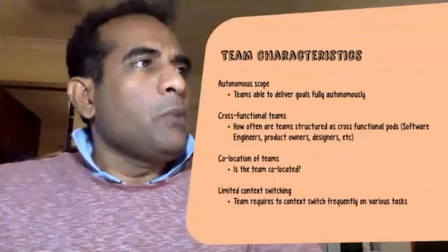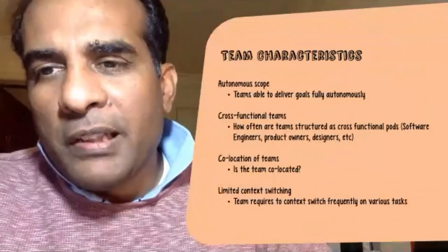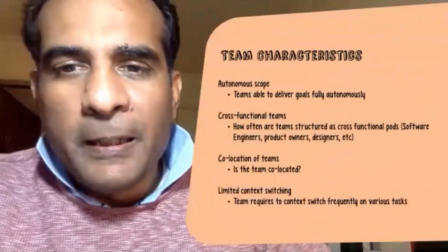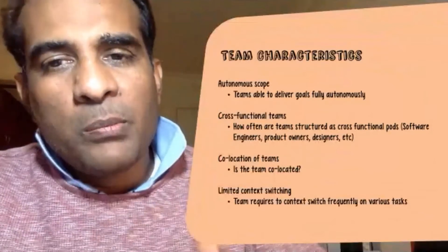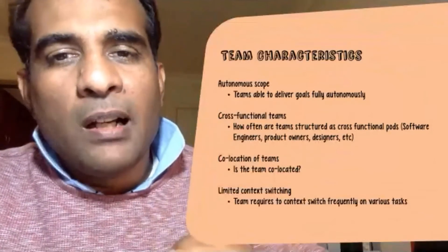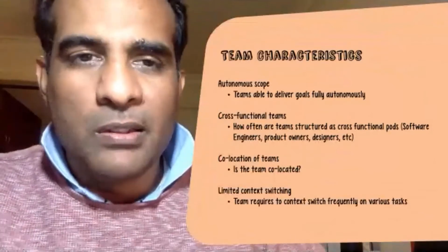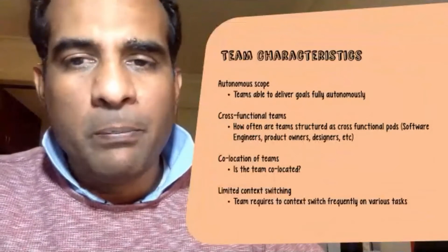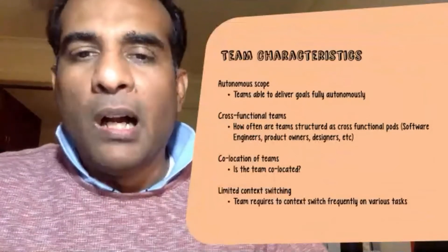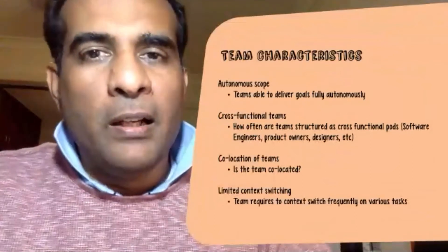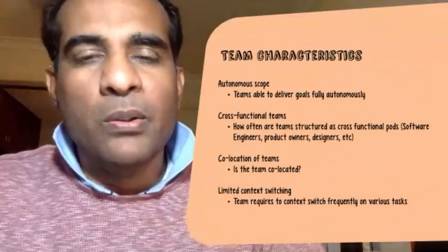Team characteristics is all about autonomous scope — are teams able to deliver goals fully autonomously? If I give a piece of a task to a team, are they dependent on other teams, or can they actually do something on their own? That's an important factor.